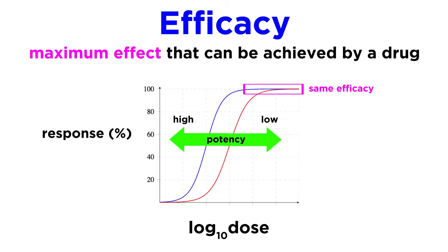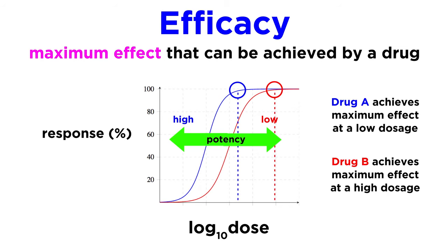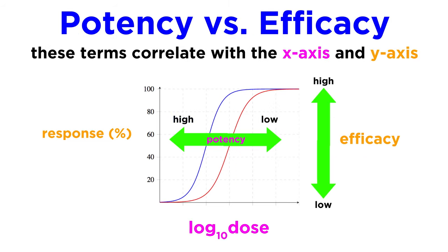And similarly, two drugs can have the same efficacy but differ in their potency, since one requires a smaller dosage to achieve its maximum effect than the other. So we can clearly see that potency correlates with the x-axis, while efficacy correlates with the y-axis.